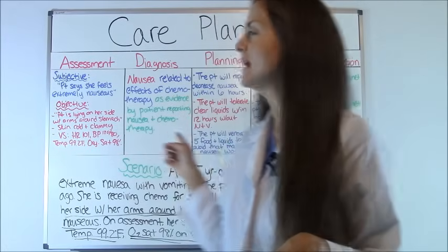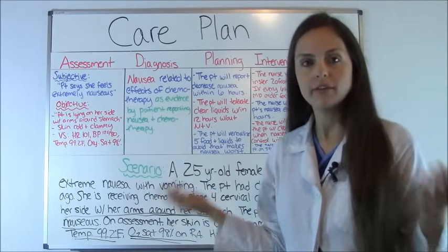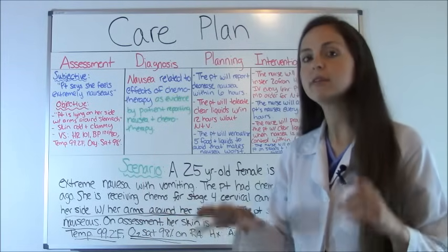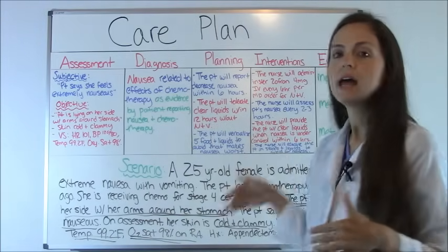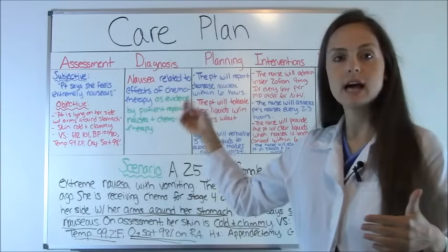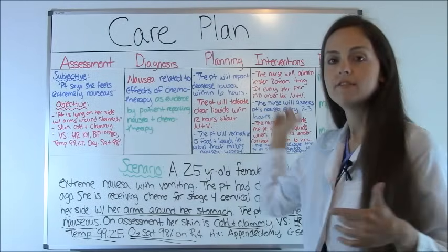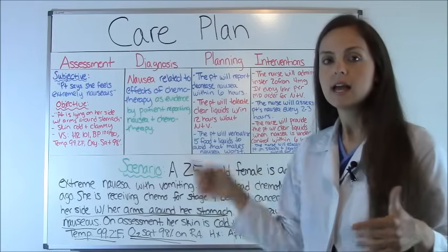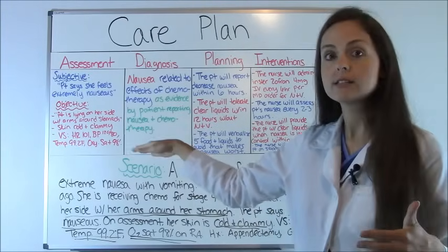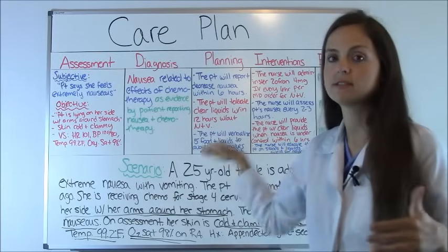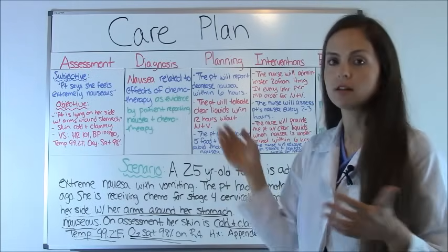Behind me we have what a basic care plan looks like whenever your professor gives you the assignment. They typically give you a blank sheet of paper with columns. The columns you have are: assessment, diagnosis, planning, interventions, and evaluations. Some professors have interventions as a column and rationales as a separate column. In this example we just have these columns.